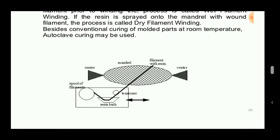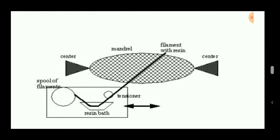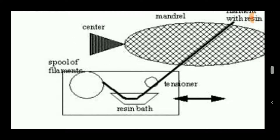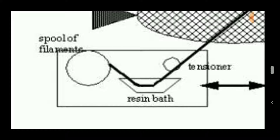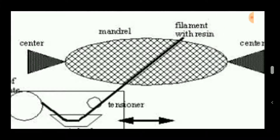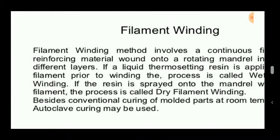The filament winding process consists of a cylindrical or custom-shaped mandrel placed between two centers so that it can be rotated easily. A spool of filament is wound on this mandrel while passing through a resin bath, and a tensioner is used to tension the filament as it winds along the cylindrical mandrel.